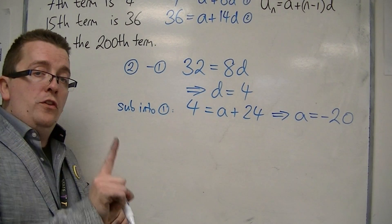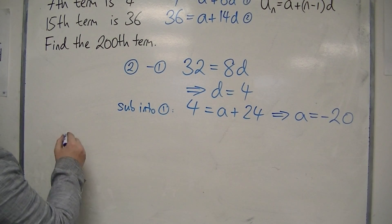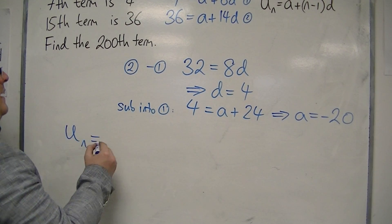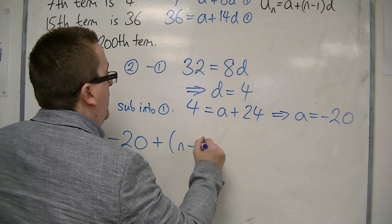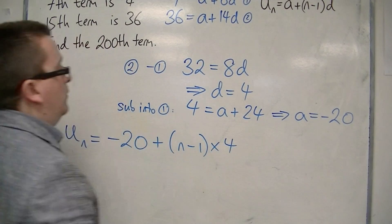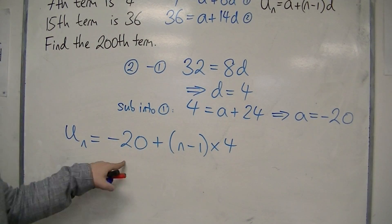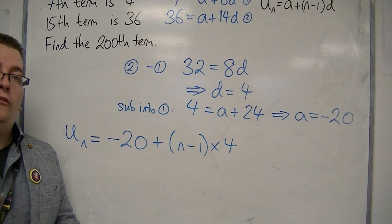So that now means that I've got the A, I've got D, and I can then write UN is A plus N minus 1 times D, which is 4. So this is the nth term of the sequence.